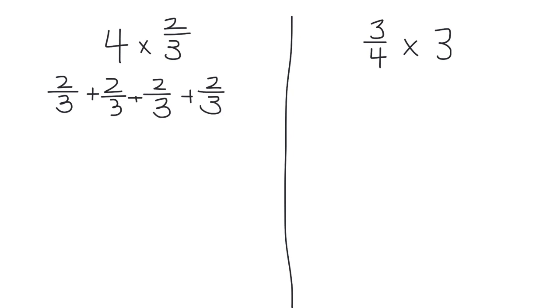That's because we are adding four copies of 2/3. And so when you add those together, you get 8/3, which is equal to 2 and 2/3.